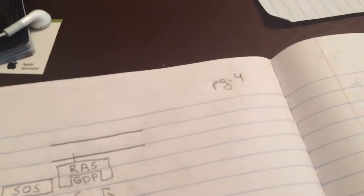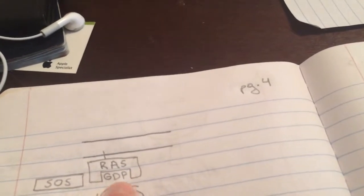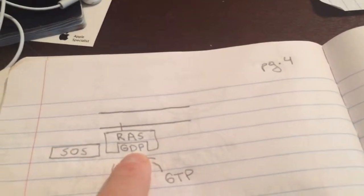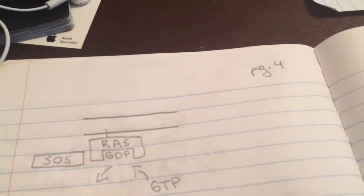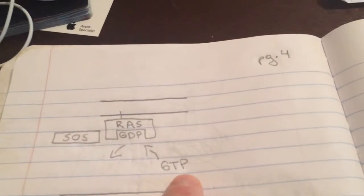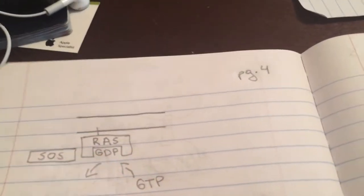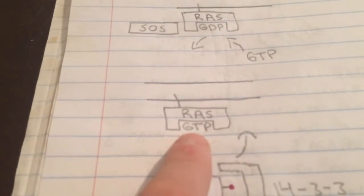So SOS gets there and it weakens the bond between guanine diphosphate right here, which is the off state. And that comes out and goes into the cytoplasm. And GTP, which is guanine triphosphate, is taken up into RAS, which will be the on state. So now this GTP and RAS is in the on state.